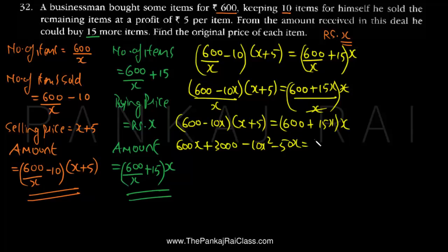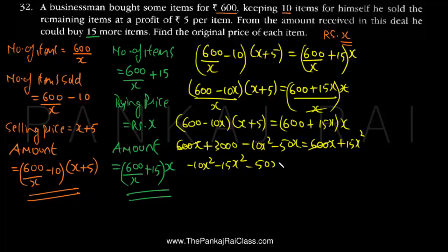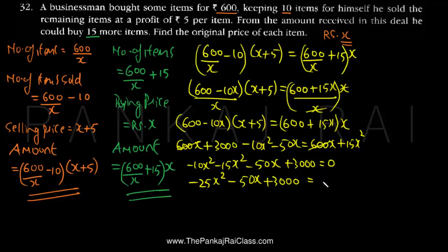That equals 600X + 15X² on the right. The 600X terms cancel. Bringing everything to the left hand side gives: -10X² - 15X² - 50X + 3000 = 0, which simplifies to -25X² - 50X + 3000 = 0.